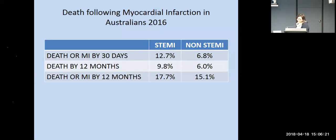A question often asked in cardiac rehab: if a person's had a heart attack, what is the risk of them having another one or dying in the next 12 months? There are statistics available on this, broken down depending on whether a person has sustained a STEMI or non-STEMI. The statistics are not insignificant — for example, a person having suffered a STEMI, 10% of those people will die by 12 months post-event.